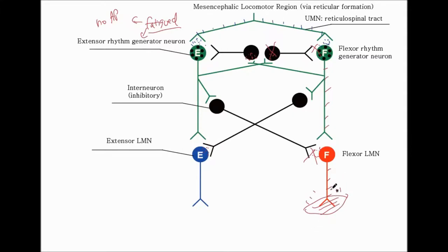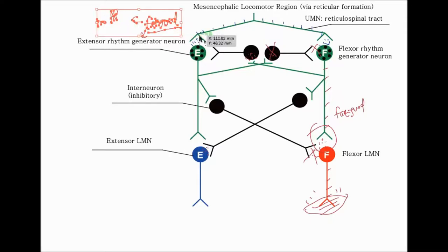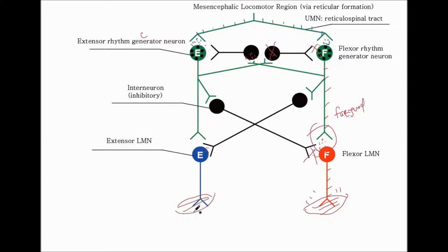This won't last long, because eventually the neurotransmitter delivered to the lower motor neuron will also be fatigued. The situation then reverses — the flexor side fatigues, and the extensor side, having had enough time to recover, can now be activated. The extensor side generates action potentials and contracts the extensor muscles accordingly.